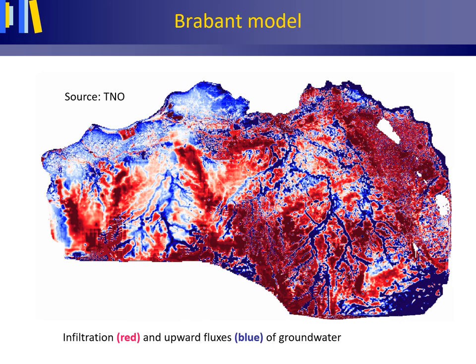This picture shows output from the Brabant model — a groundwater flow model developed at TNO in the Netherlands based on a finite volume numerical modeling approach. The output shown is of the Dutch province of North Brabant, with red colors showing the higher infiltration areas and blue colors showing the lower areas with upward seepage. It lies outside the scope of these lecture series to further introduce numerical modeling methods.